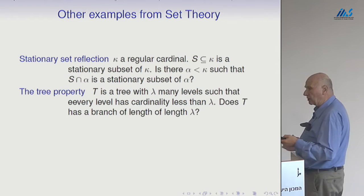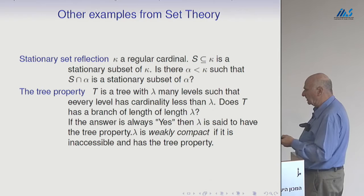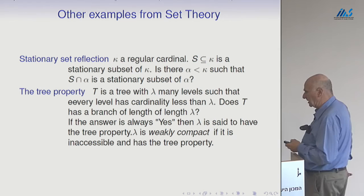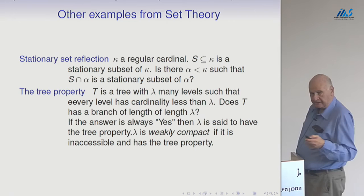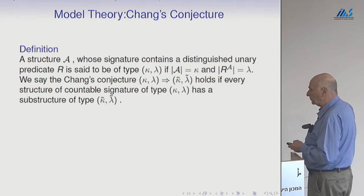The tree property is an example of a compactness principle. You have a tree with λ many levels, where every level has cardinality less than λ — does T have a branch of length λ? That's essentially a compactness property. For the tree property, the answer is always yes at ω — that's König's lemma. And λ is called weakly compact if it is inaccessible and has the tree property.